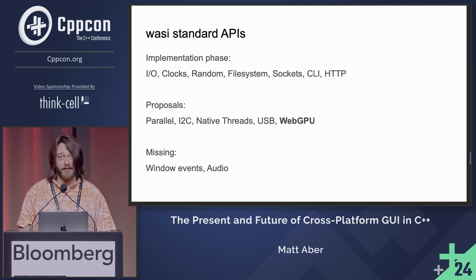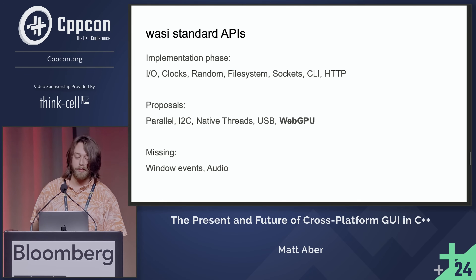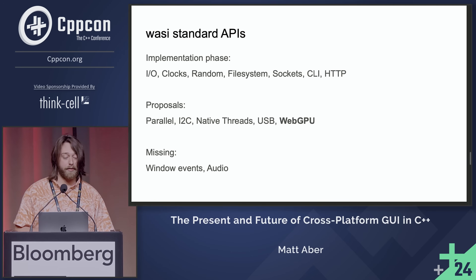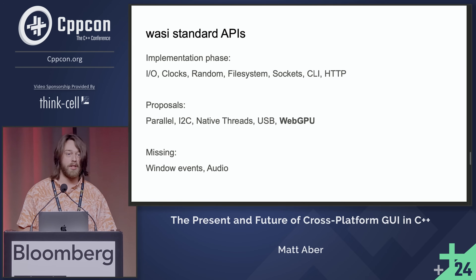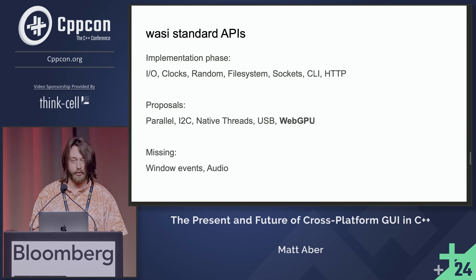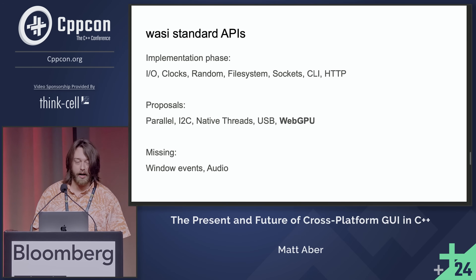So where are we at? Nothing is standardized yet. But in the implementation phase we have things like file systems and sockets. In proposals, we have things like native threads and WebGPU, which is going to be important for writing GUI applications — you can get canvases and leverage the GPU to draw more efficiently. What we are missing are proposals for things like mouse events and any kind of audio API, which are going to be important to add in the near future.